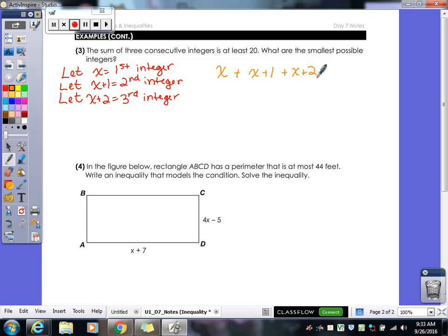So again, it tells us the sum of them. So that means I need to add X plus X plus 1 plus X plus 2. So it says is at least 20. So what's my inequality going to be for this? Greater than or equal to. Because if it's at least 20, that means I could be more than 20 and be very happy with the situation. So combining our like terms, I get 3X plus 3 is greater than or equal to 20. So subtract 3.